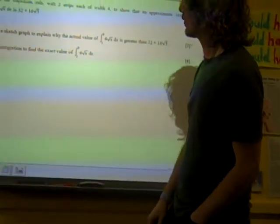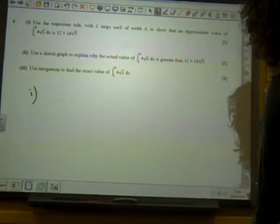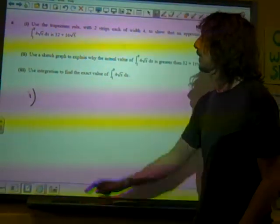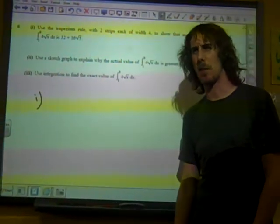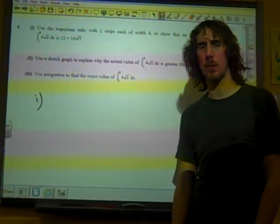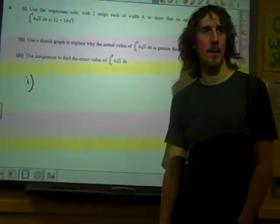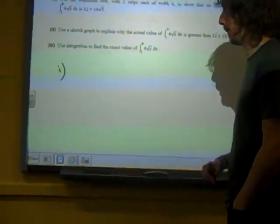Here's the Trapezoidal Rule with two strips, each of width four, to show that an approximate value of that is there. Two strips in the Trapezoidal Rule just feels completely pointless. Why do it with two strips? But anyway, that's what we're doing.